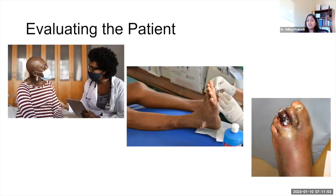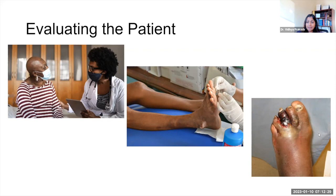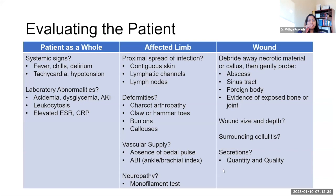How do you evaluate the patient? Don't just look at the ulcer. You have to take a step back and look at the patient as a whole. First determine: are they sick or not sick? That helps you triage whether to treat outpatient or admit for IV antibiotics. Then look at the entire limb with a thorough exam. Step three is looking at the ulcer more closely.